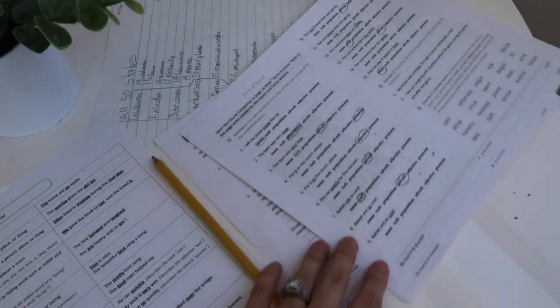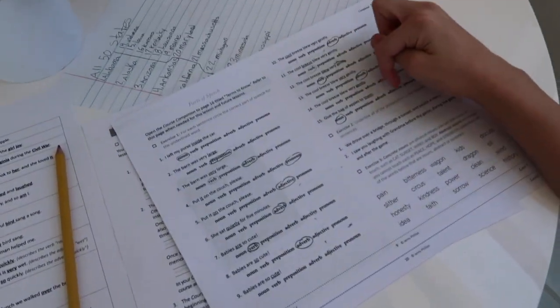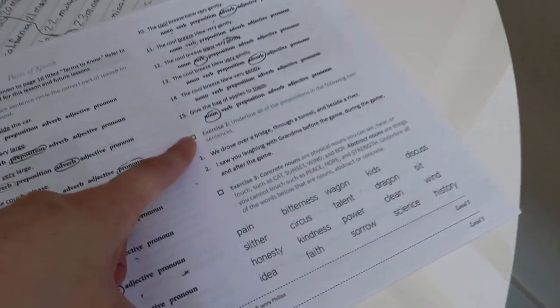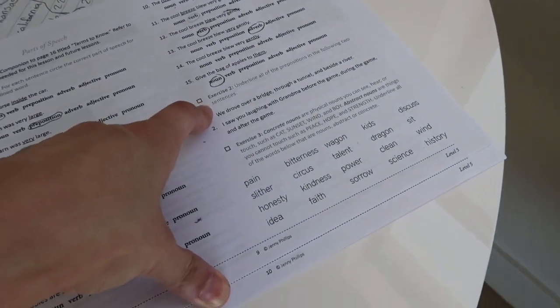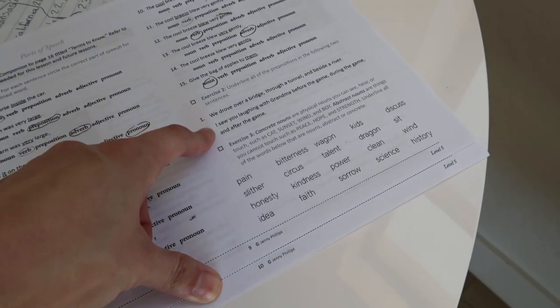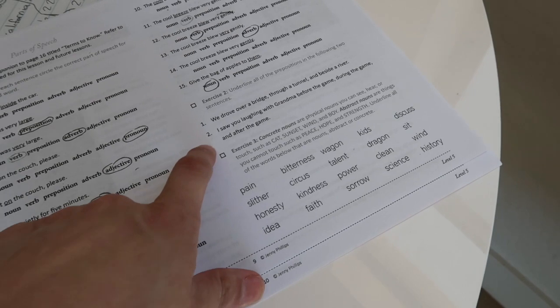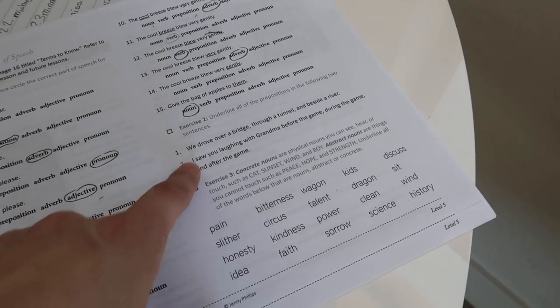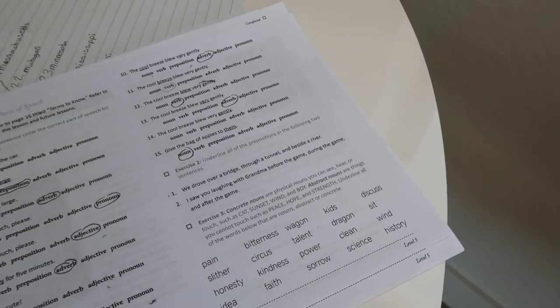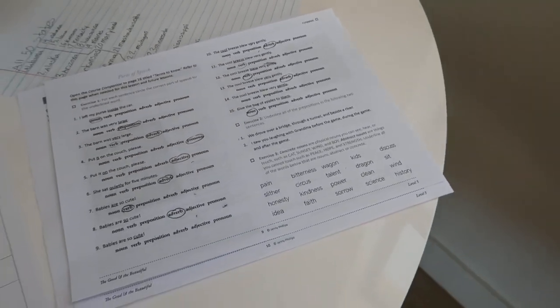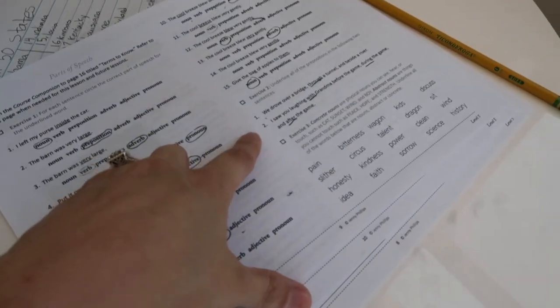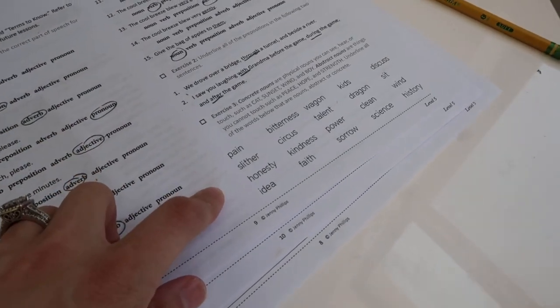All right, so you've finished. Okay, we'll go over that. And now here, exercise two, you're going to underline all the prepositions in the following two sentences. Remember what a preposition is? Yep. Okay, so in these two sentences, you're going to underline all the prepositions in both these two sentences. All right, so she finished that part.